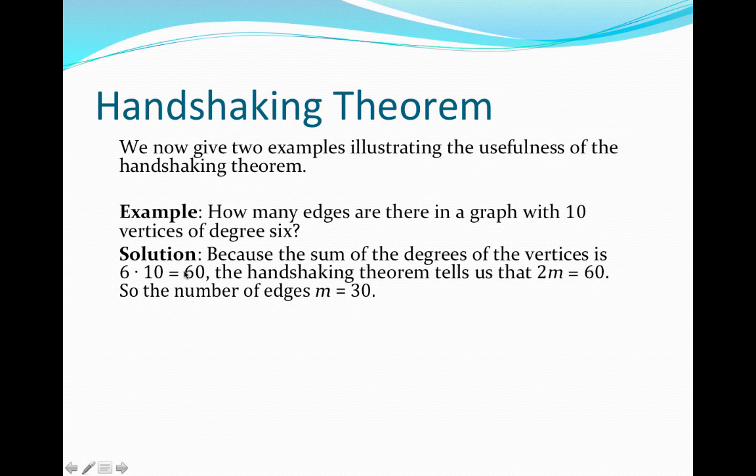So this is the sum of the degrees of all of the vertices. And since we know that the sum of the degrees of all of the vertices is equal to 2 times the number of edges, we get the following equation, 2m is equal to 60, which tells us that m is equal to 30, or the number of edges is equal to 30.